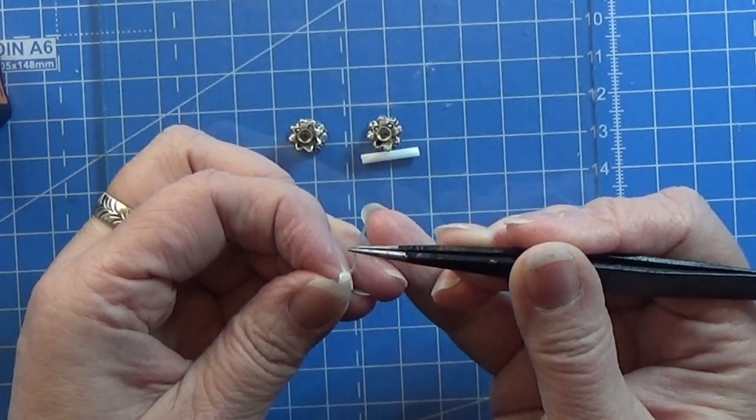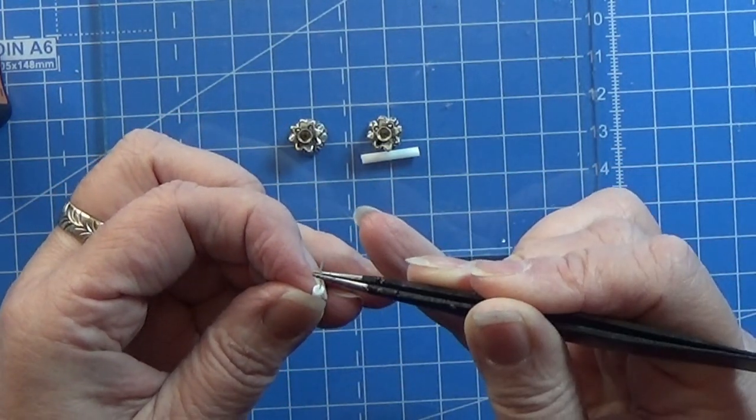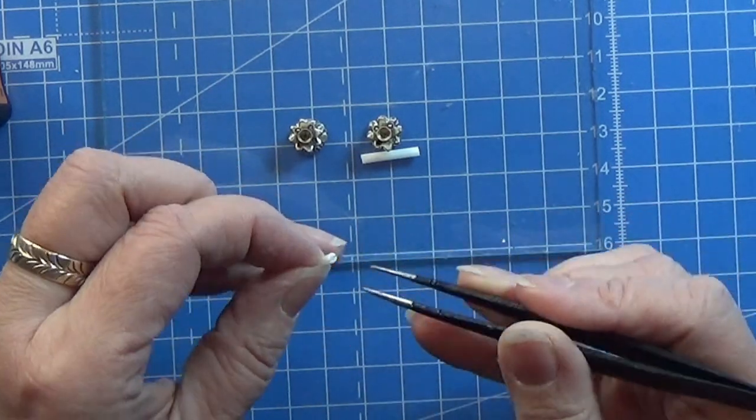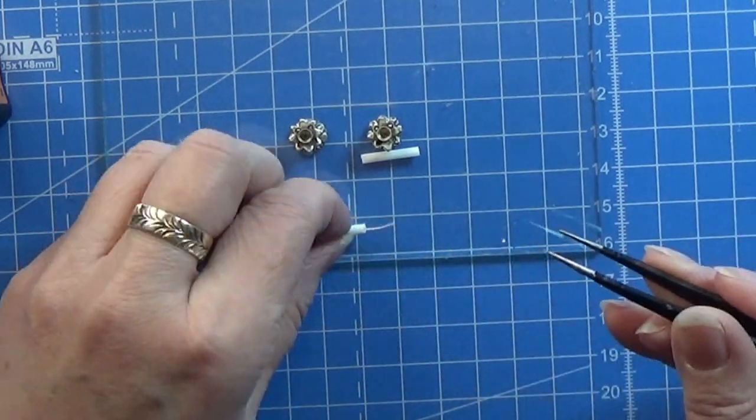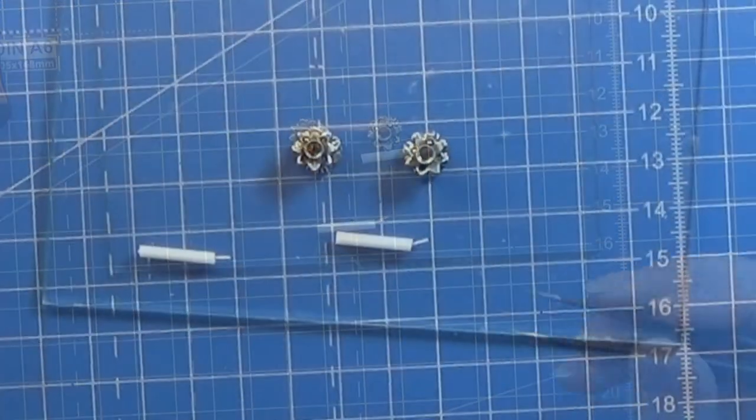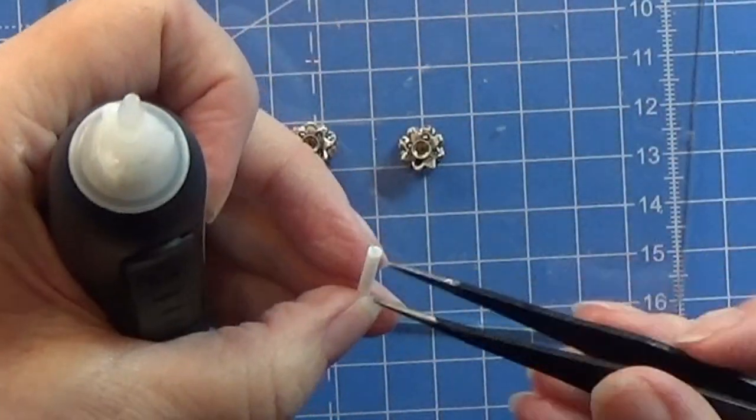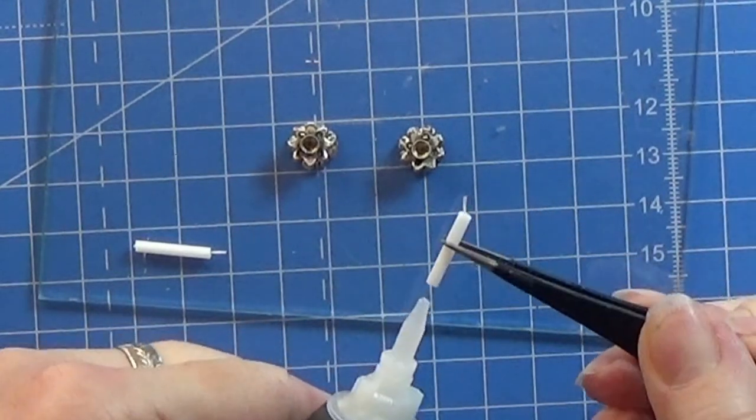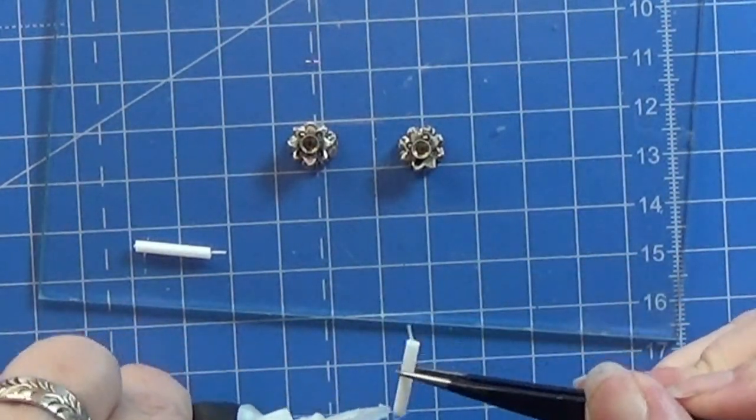Or sewing thread, and glue it into this little piece of plastic for the wick. Then I'm just going to leave it to dry. Make both of them before you continue.